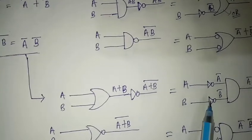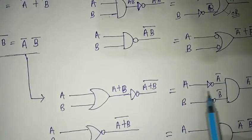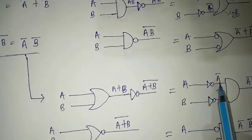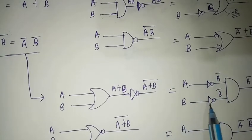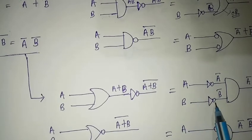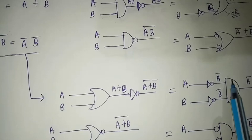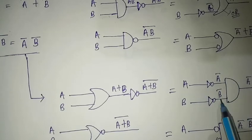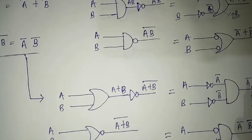We take A as input and pass through a NOT gate to get Ā, and B passes through a NOT gate to give B̄. After getting Ā and B̄, we take an AND gate and we get Ā · B̄.